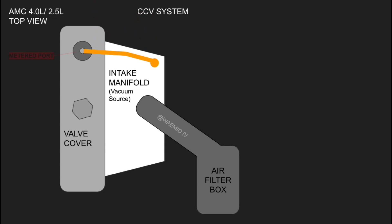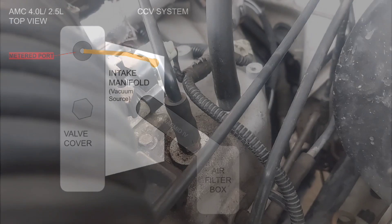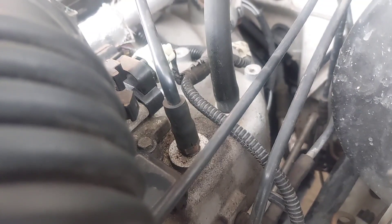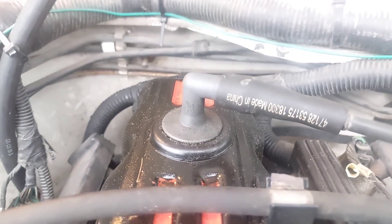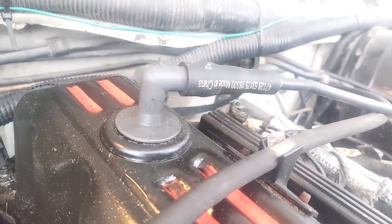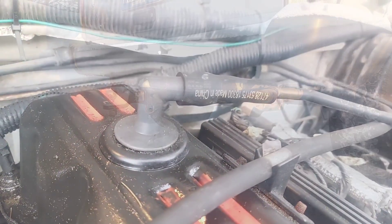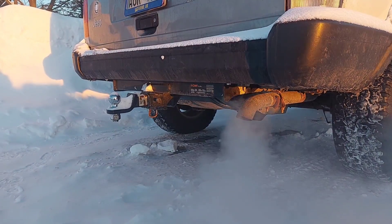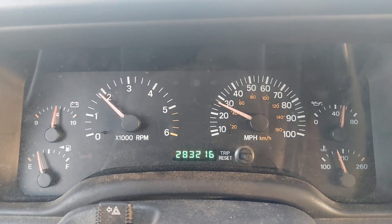In the 1960s, someone noted that instead of routing the vent directly to the atmosphere, you could connect it to the intake manifold, which provides vacuum. With the crankcase under vacuum, the excess air pressure from blow-by is automatically sucked out, meaning it never has the opportunity to pressurize in the first place. The tube is much less likely to clog because of the constant vacuum, and the blow-by vapor is sent into the combustion chamber where it's effectively recycled.